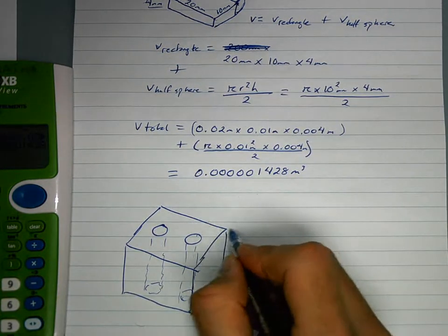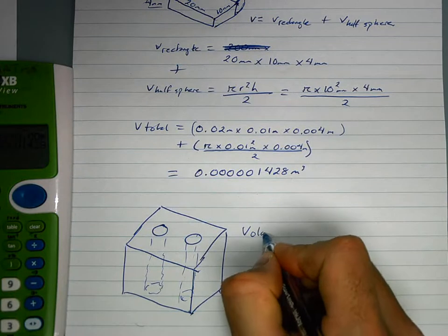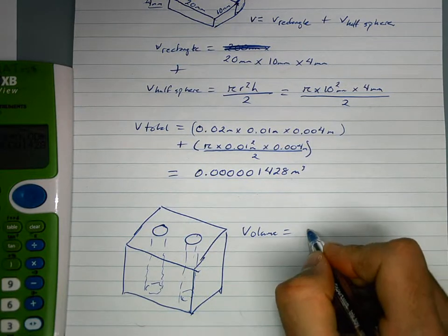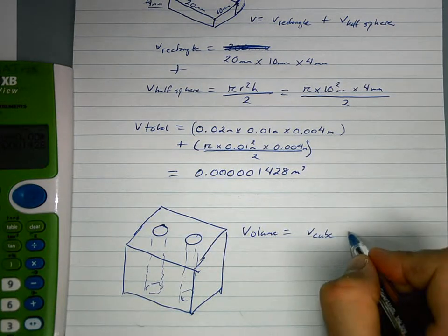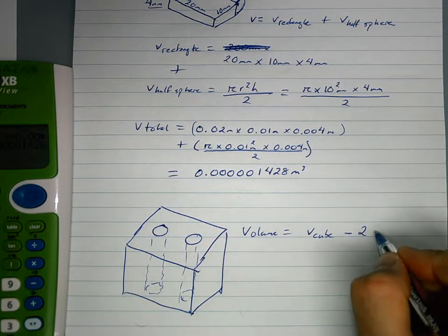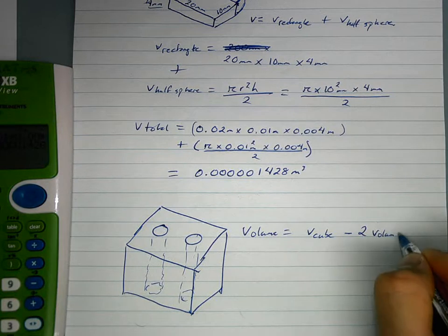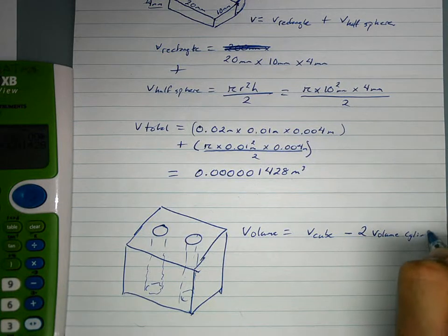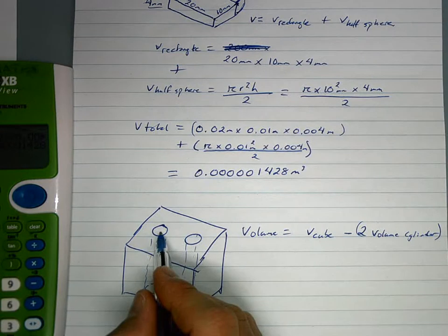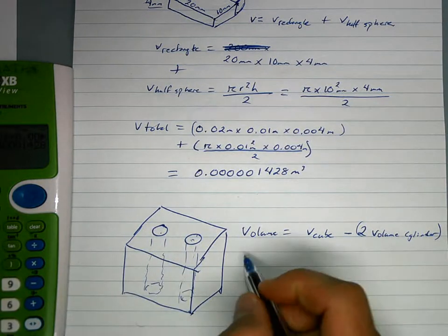You would have the volume of this shape is equal to the volume of a cube, take two volume of a cylinder, because you've got to subtract those two cylinders.